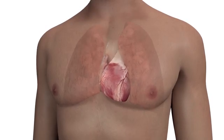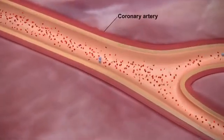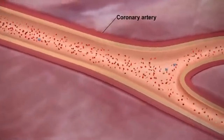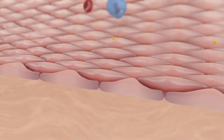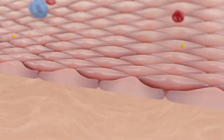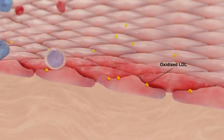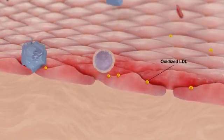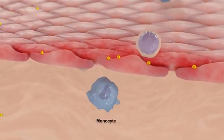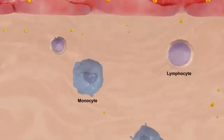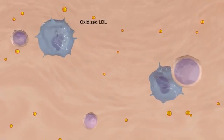Atherosclerosis is a slow, progressive disease process that commonly affects the coronary arteries. Atherosclerotic lesions begin with an endothelial injury due to chronic hemodynamic stress and circulating oxidized LDL cholesterol. The resulting endothelial cell dysfunction facilitates monocyte and lymphocyte migration and allows LDL particles to pass into the intima, where they become oxidized.